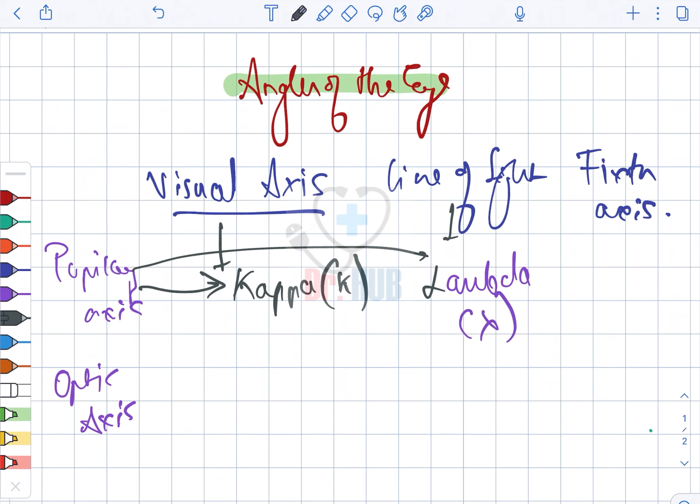Next we are looking at the optic axis and the visual axis. Here it is alpha.